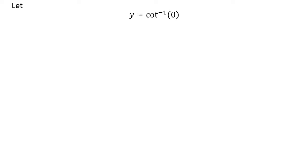Let us assume y equals inverse cotangent of 0. Now, we know the range of the inverse cotangent function is the open interval of 0 and π. So, the above statement implies the value of y lies in the open interval of 0 and π.